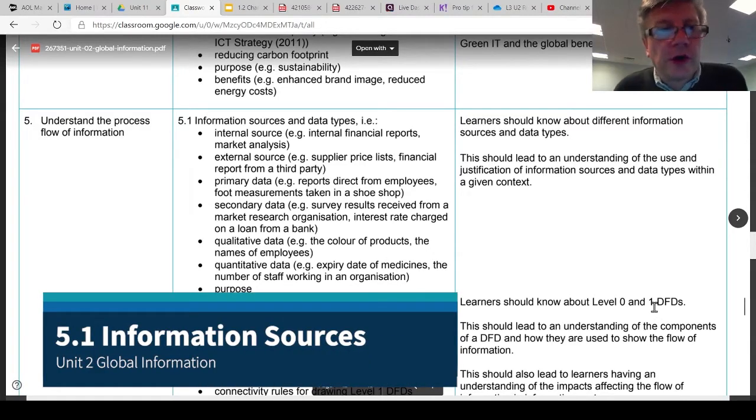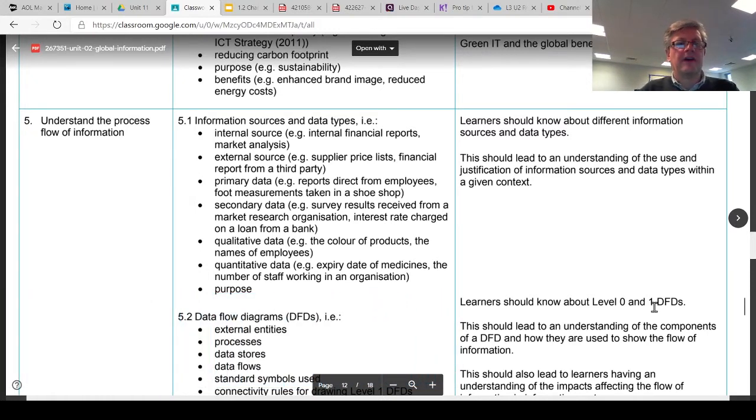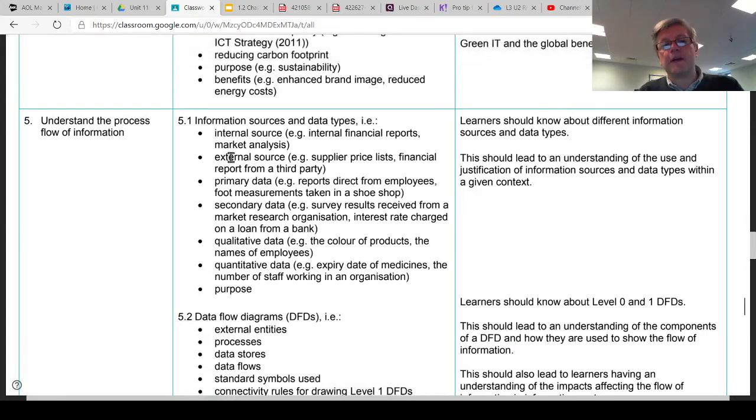Topic 5.1 is about information sources, and there really are six subtopics in 5.1: internal and external sources of data, primary and secondary sources of data, and data which is qualitative, opposed to data which is quantitative.